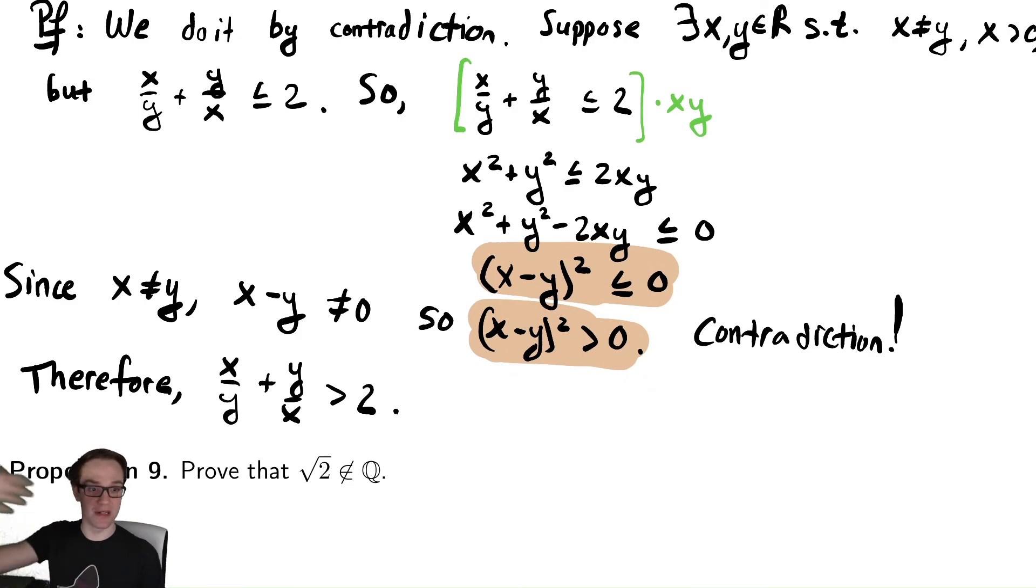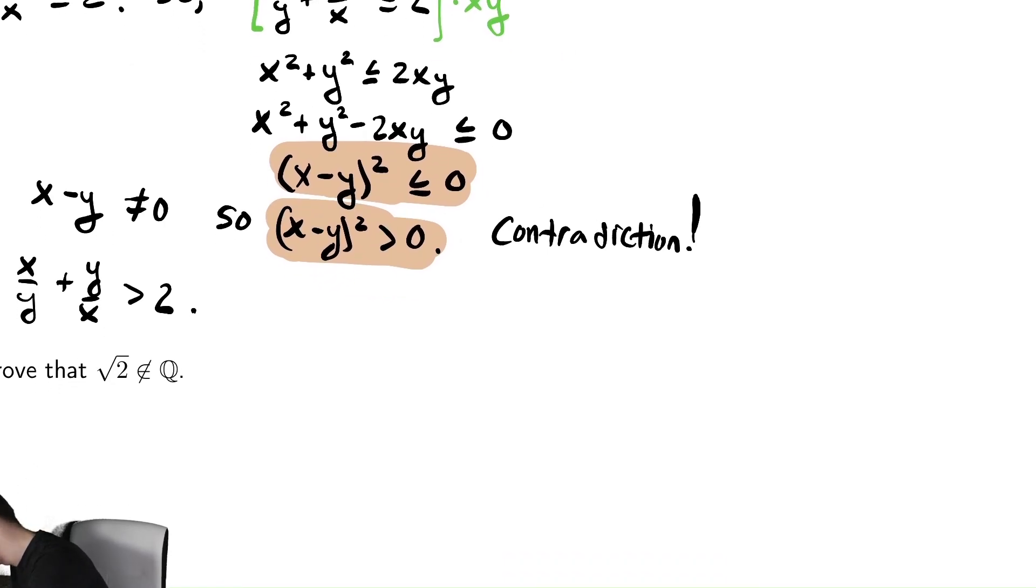You can also write this similar to what we did before with the result follows by contrapositive, or you could write the result follows by contradiction or something like that here. There's various ways you could finish this off, but you need to make sure that you tell someone that you're done with the proof. One way you can do that as well is to symbolize that. Some people draw like a double line at the end of their proof, or a box, or really any symbol. In LaTeX, the language I write all my notes in, you can customize that symbol, including things like the Batman symbol or other weird nonsense.